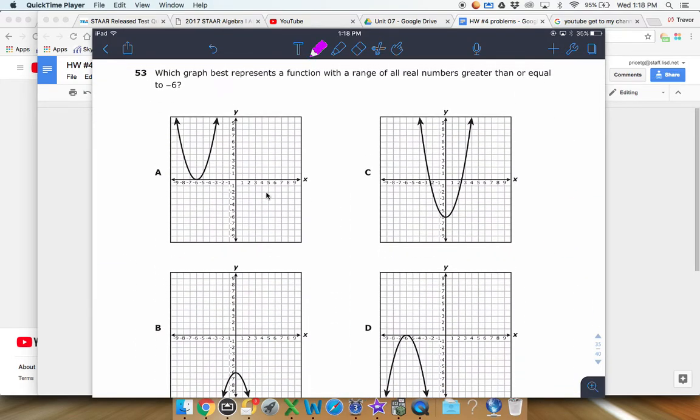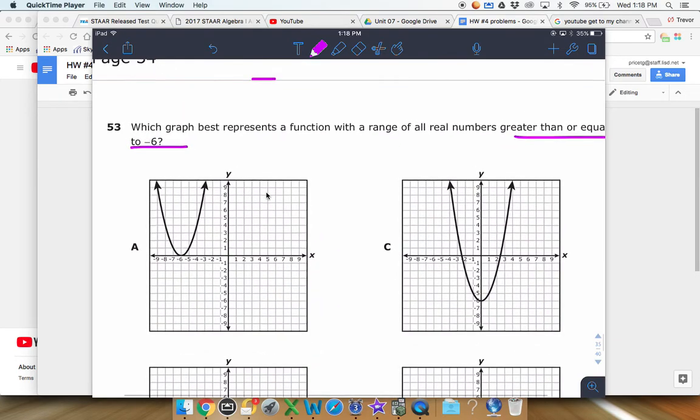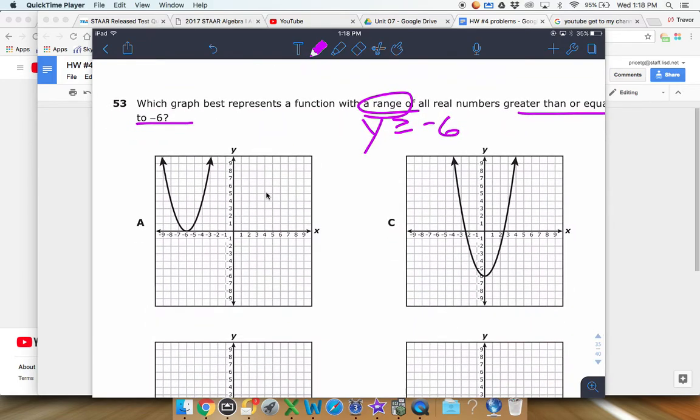Problem 53: which graph best represents a function with a range of all real numbers greater than or equal to negative 6? So since we're talking about range, that's our y values. We're talking about greater than or equal to negative 6, so that means the lowest point, or the lowest y coordinate, needs to be negative 6, and then it needs to be going up from there forever.